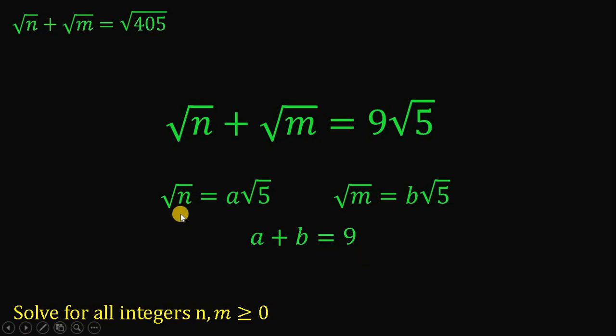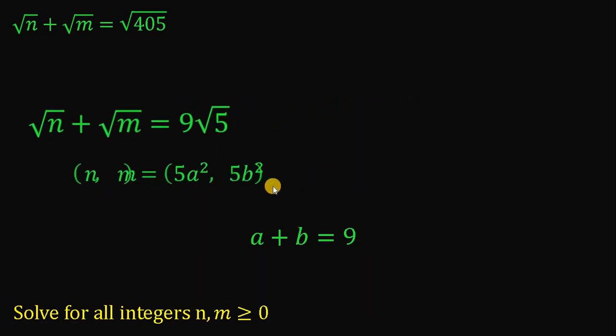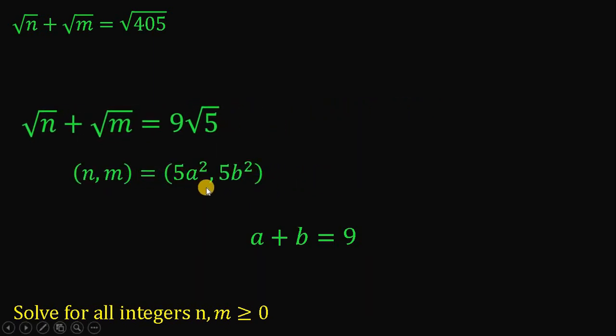Now, let's solve for the value of n. To do that, let's square on both sides. Therefore, the left-hand side is just n and the right-hand side is just 5 times a squared. On the other hand, m is just equal to 5b squared. Therefore, all pairs of n comma m can be written as 5a squared comma 5b squared, wherein a and b adds up to 9.